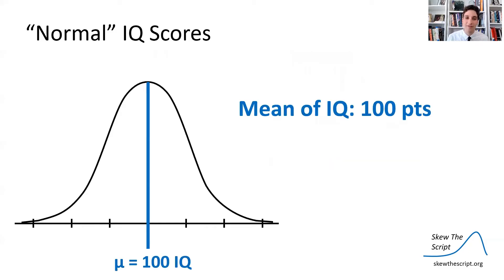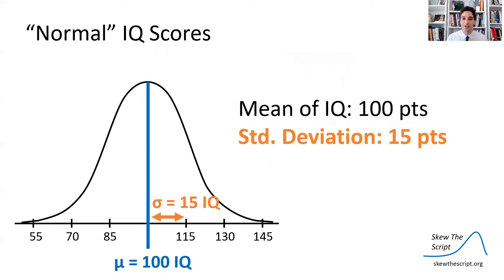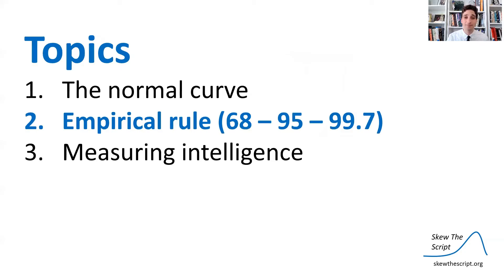Most people have IQ scores that are close to the mean of 100 points, with some variation. Some people have higher IQ scores, some lower, and very few people are going to have very high or very low IQ scores. Most believe that IQ has a standard deviation in the population of about 15 points.